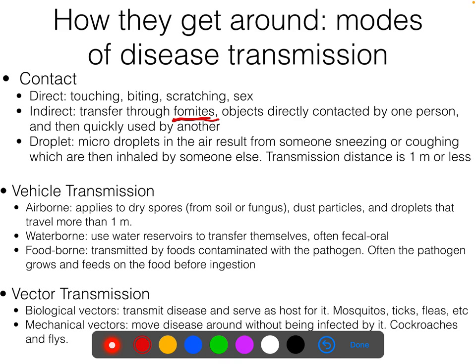Droplet transmission — we all know about social distancing now. The larger droplets released by sneezing or coughing are usually more than a micron, sometimes up to a couple of millimeters. These large droplets settle out of the air relatively quickly. The transmission distance is listed here as one meter or less.